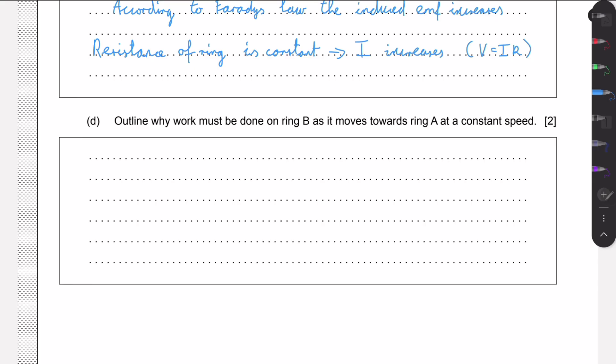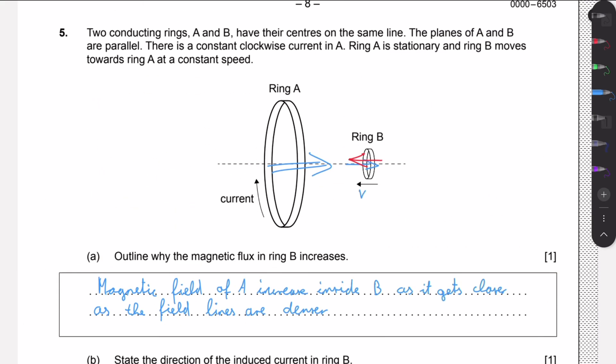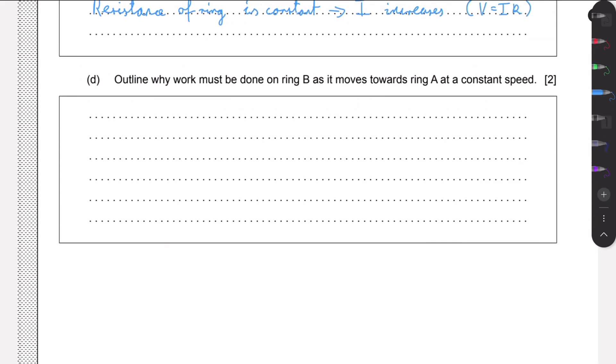And then we need to outline why work must be done on ring B as it moves towards ring A at a constant speed. Well, this again is due to Lenz's law, as ring B creates a field opposite to ring A. So induced current in B makes a field opposite to A, and these two will repel each other.